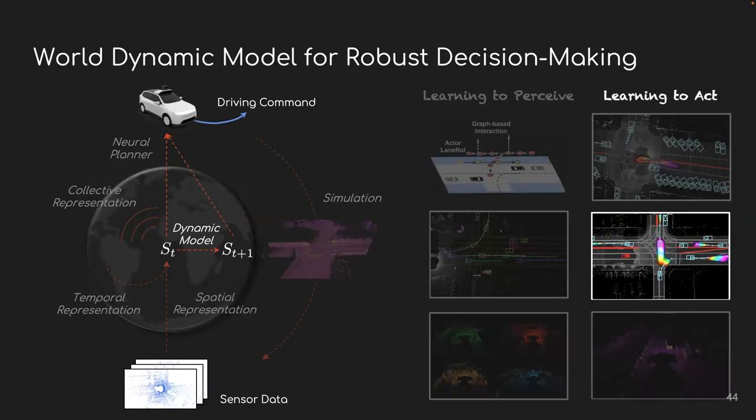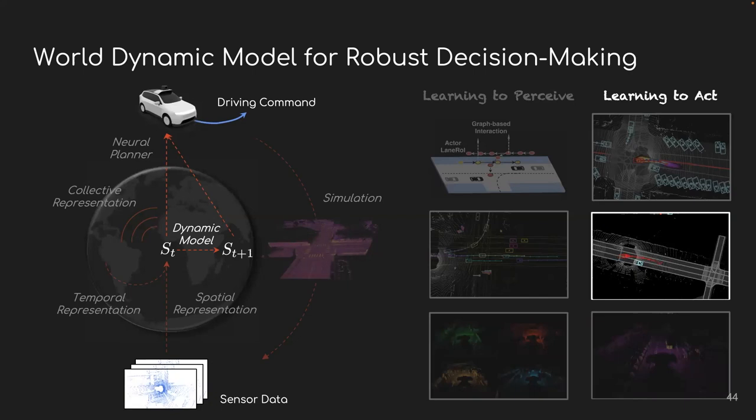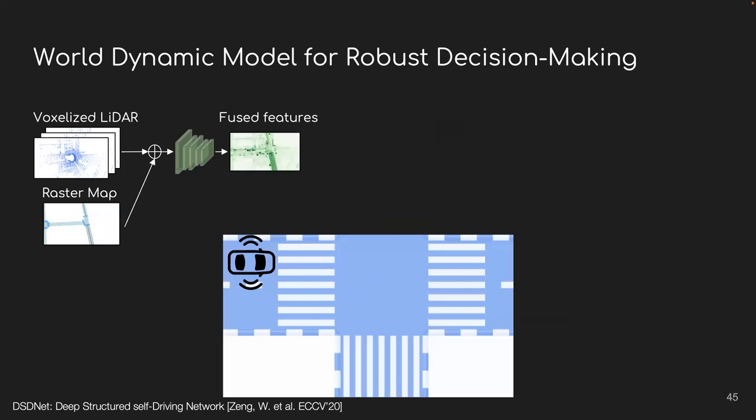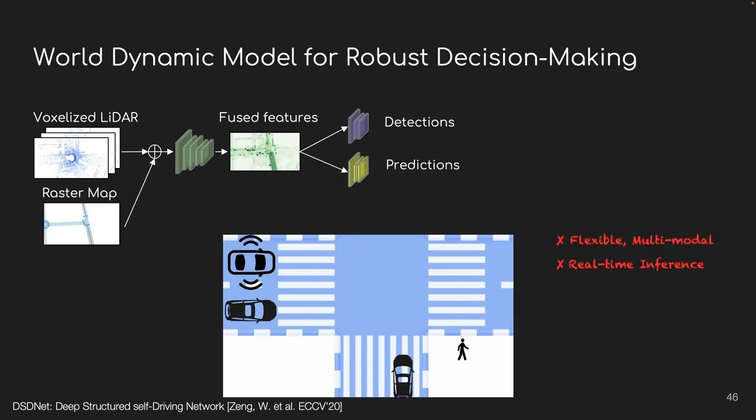To this end, we build a multi-future dynamic model of the world and plan action based on that. Let's take a closer look at how we build this model. Again, we take raw sensor data as input into the backbone and then detect objects in the scene. But then, predicting flexible distribution while allowing real-time probabilistic inference is very, very challenging.